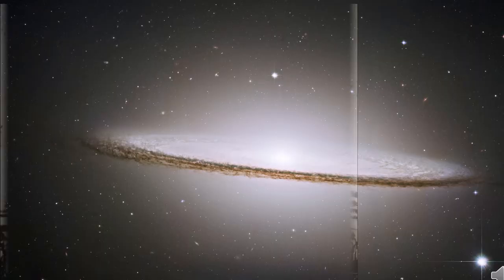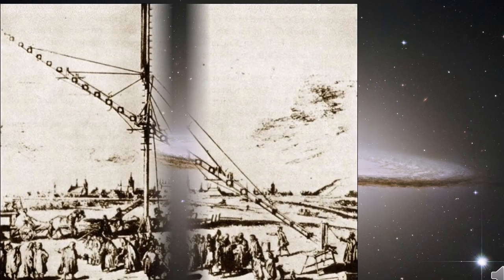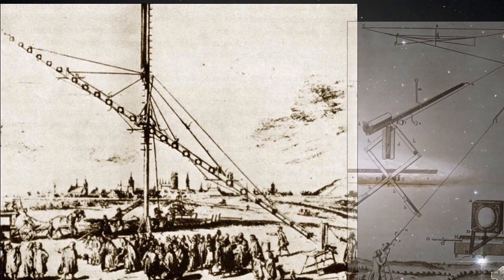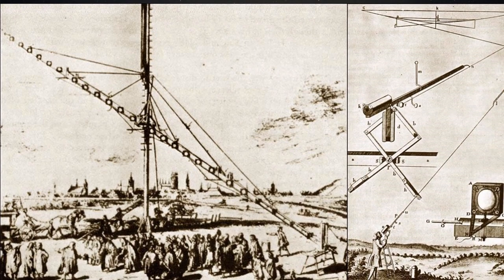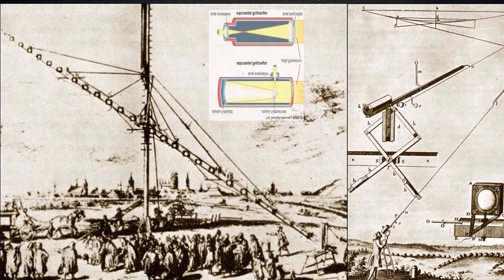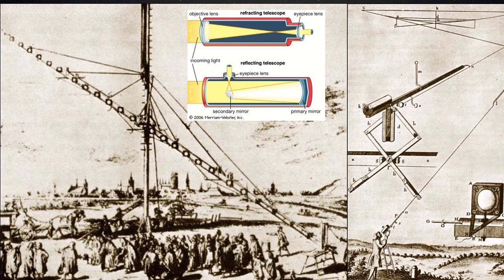Early refractor telescopes used to be very long and heavy, which made it very difficult to move around. Someone had to do something about it. In 1668, an English mathematician, physicist and alchemist solved this problem and introduced a new practical design of telescopes.